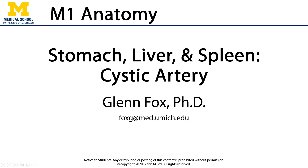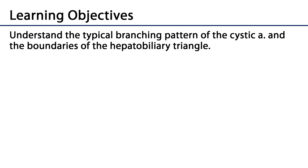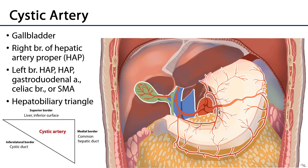Let's talk about the cystic artery. In this video we'll discuss the typical branching pattern of the cystic artery and the boundaries of the hepatobiliary triangle. The cystic artery is the blood supply to the gallbladder, so in the removal of the gallbladder the cystic artery must be ligated.